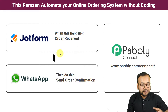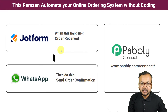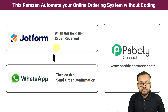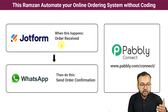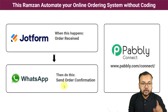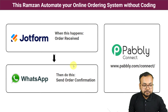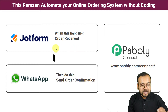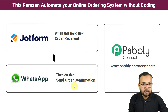This will be the flow of this automation. I have created an order form using JotForm application — you can use any other form building application like Google Forms or Typeform. As and when any person fills this form to make an order and you receive it, a confirmation message will be delivered to the WhatsApp account of your customer automatically. You need not sort out contact details or manually type a message.